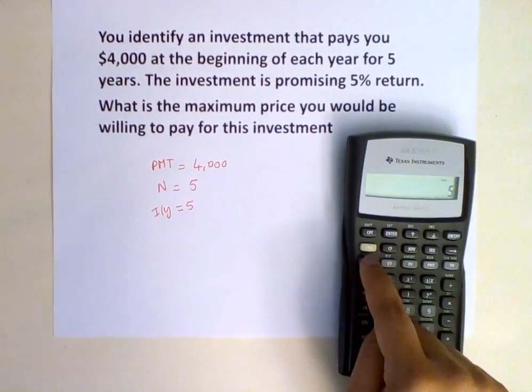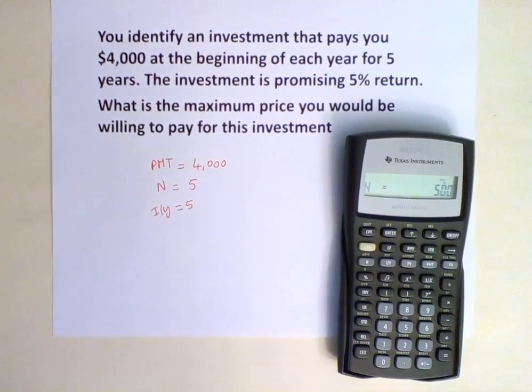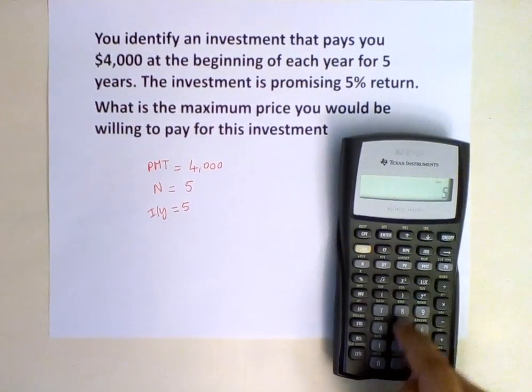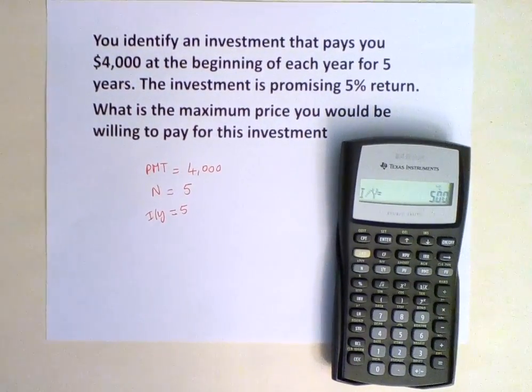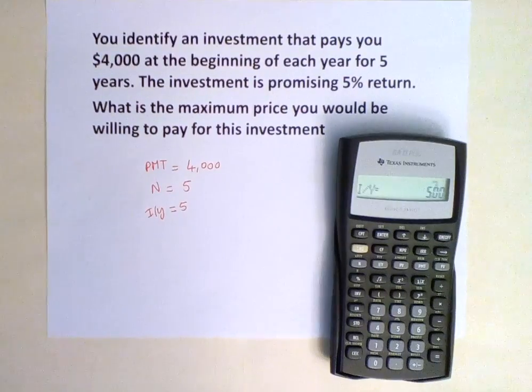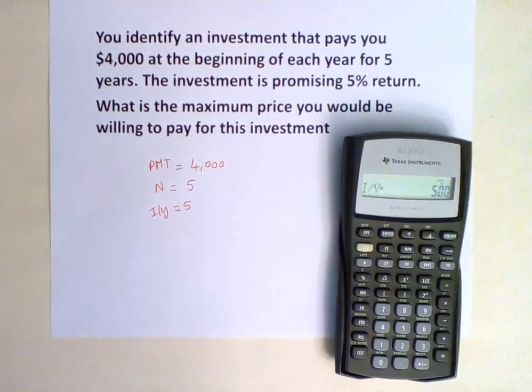Five is the number of years we're investing, so we hit N. And 5% is our return, so we enter five and push the I over Y button. We're looking for the price we would be willing to pay for this investment today, so we're looking for the present value.